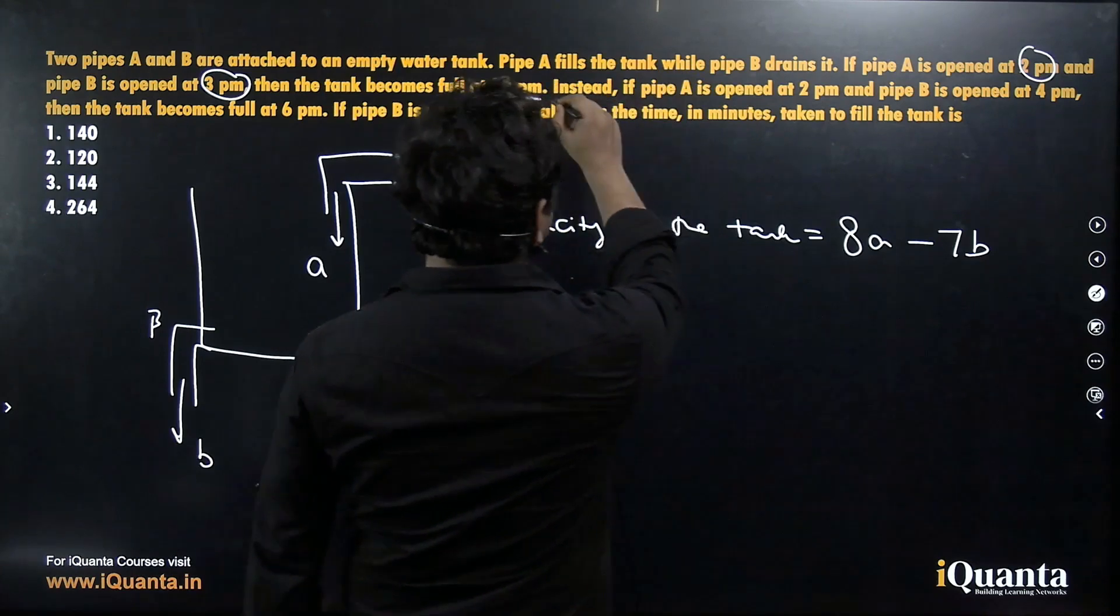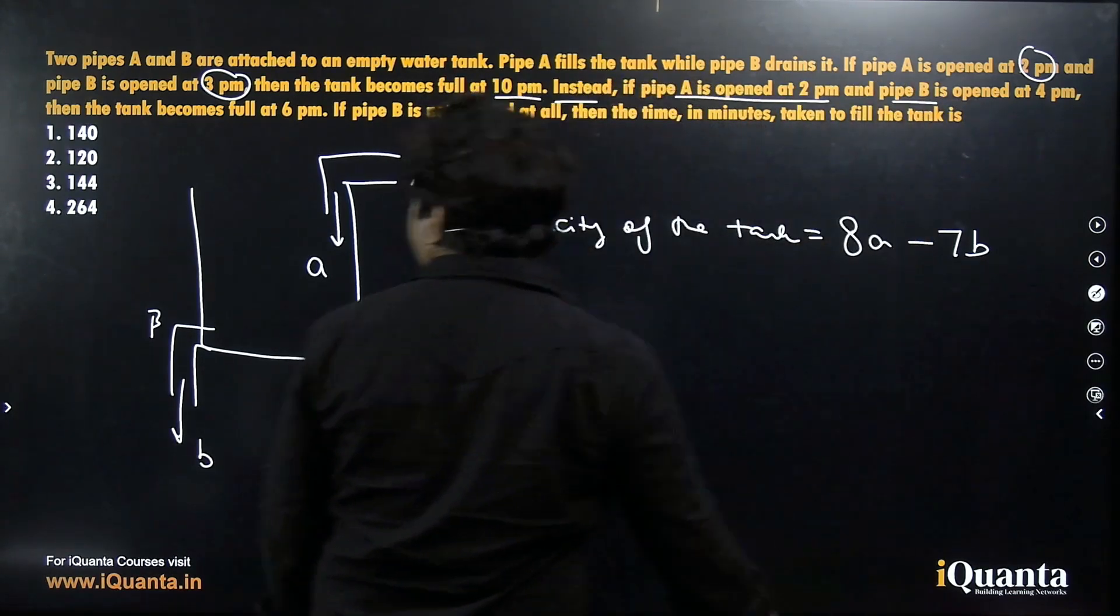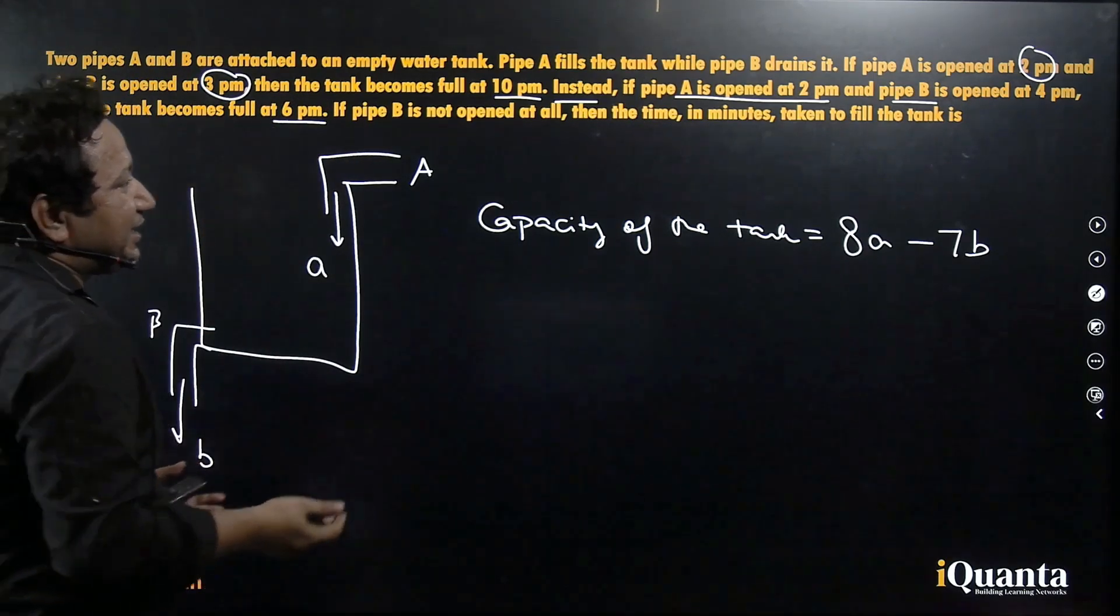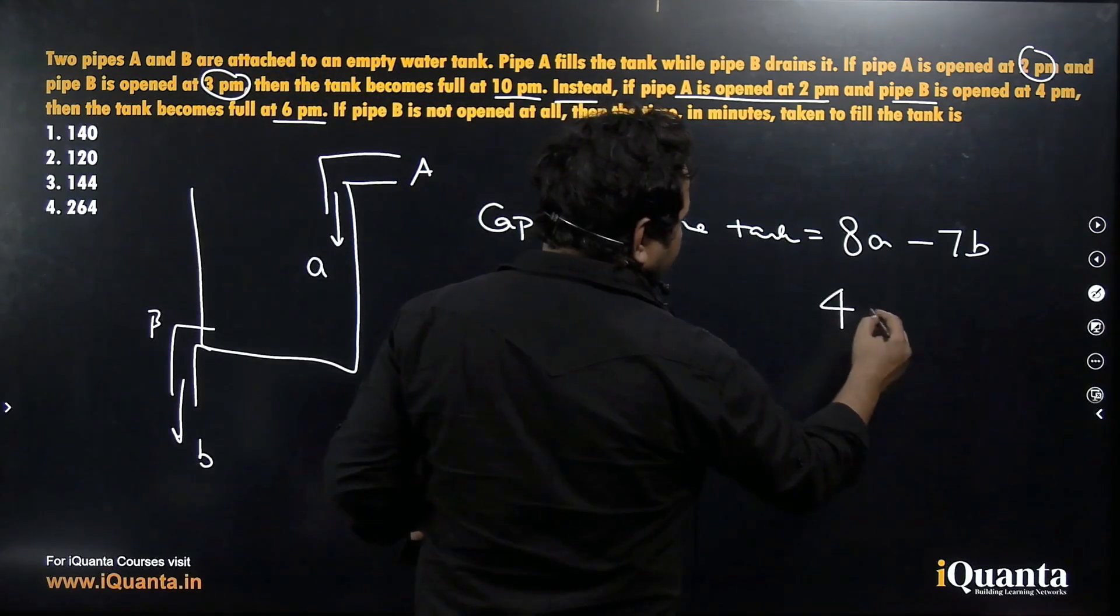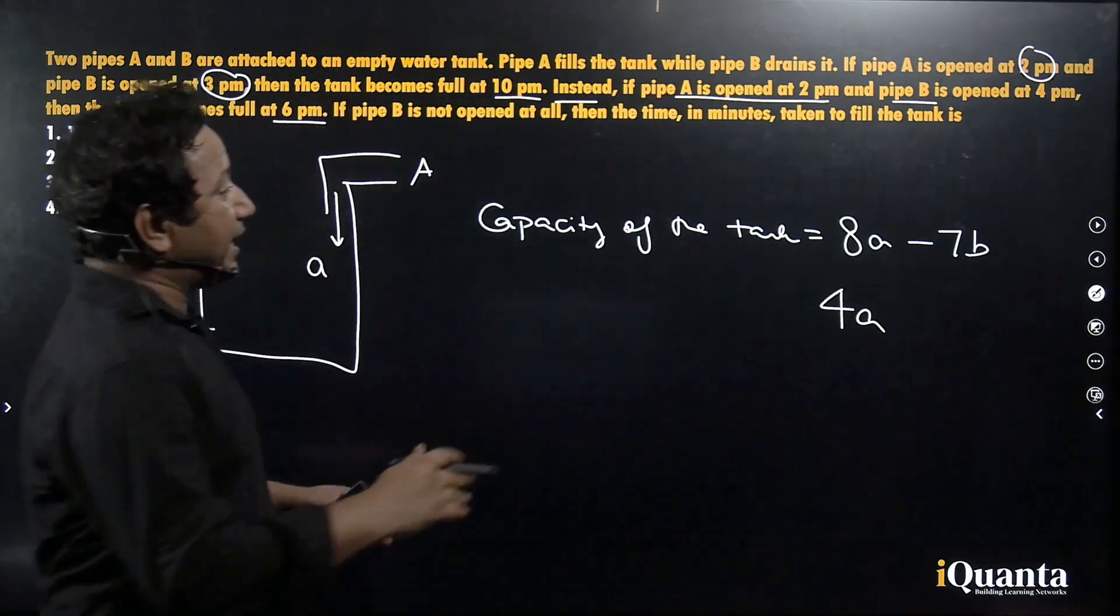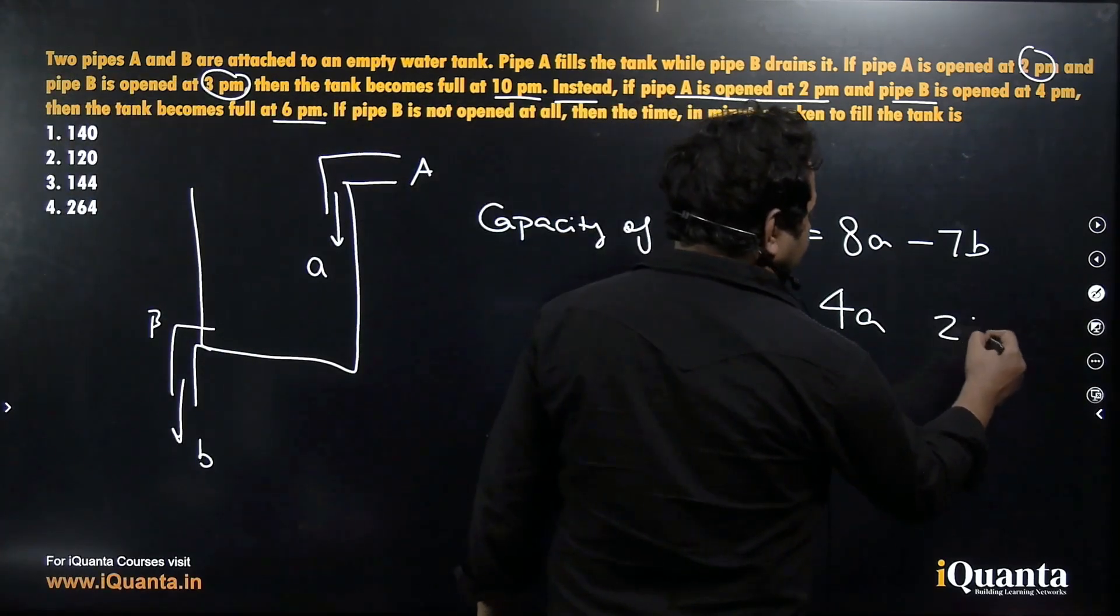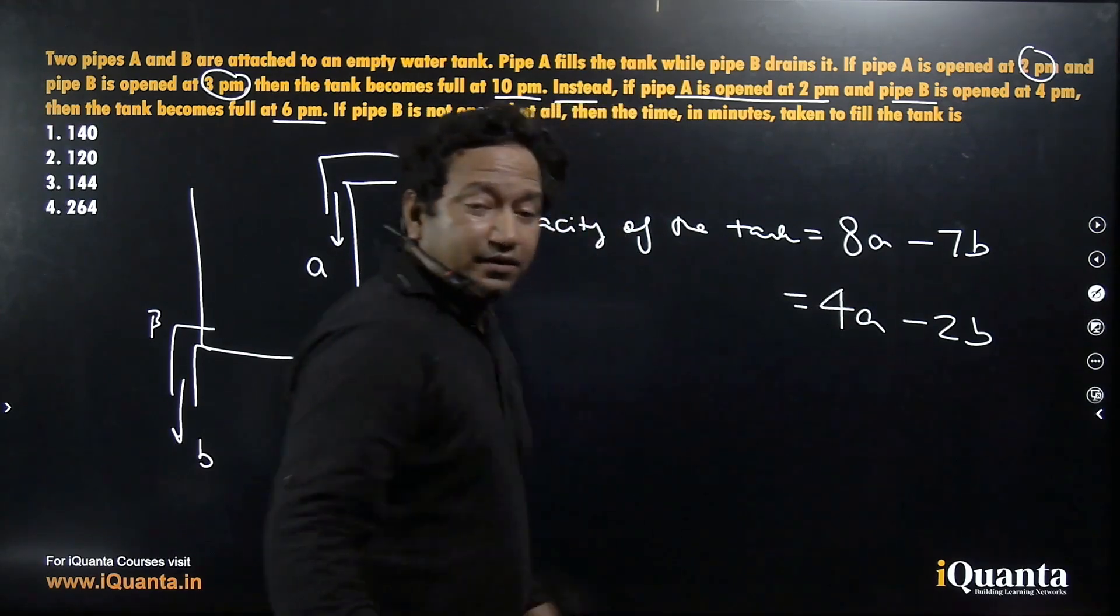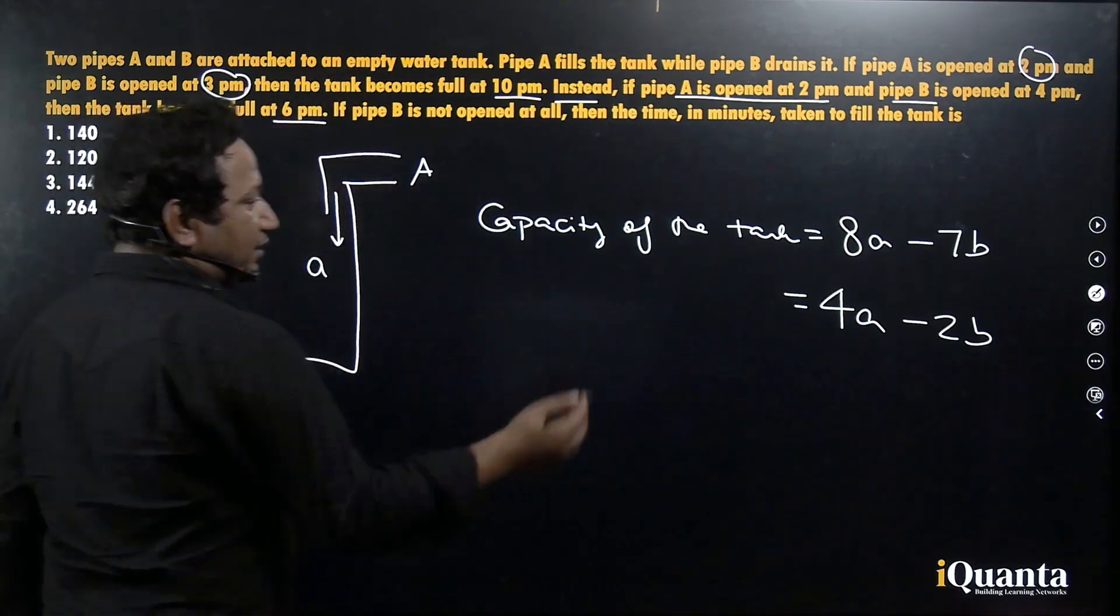The second condition, instead if pipe A is opened at 2 p.m. and pipe B is opened at 4 p.m., then the tank becomes full at 6 p.m. That means, the second case, pipe A is open from 2 to 6. That is for 4 hours. 4A will be poured in. And pipe B is open from 4 to 6. That is for 2 hours. 2B will be drained out. So capacity of the tank can be represented by these two equations. And of course, we can equate that.